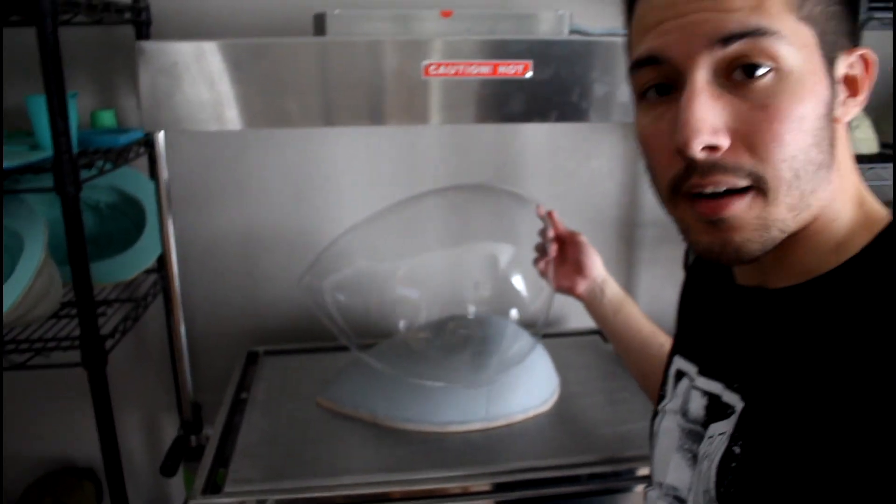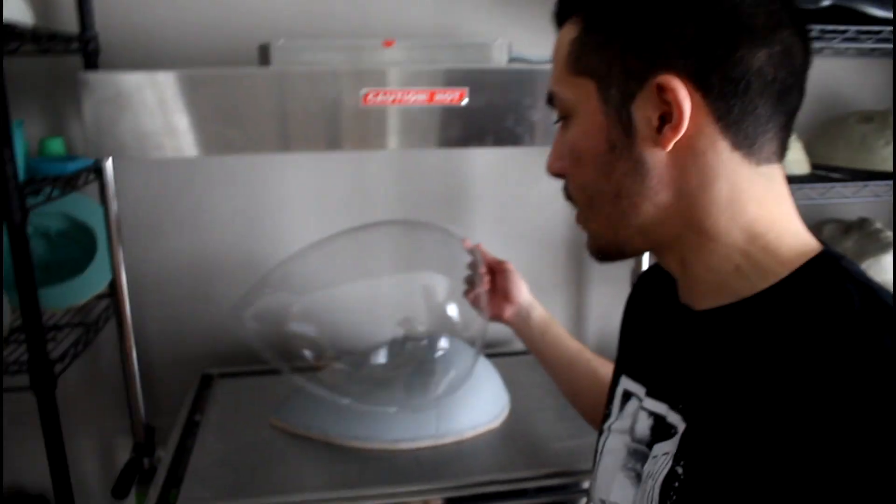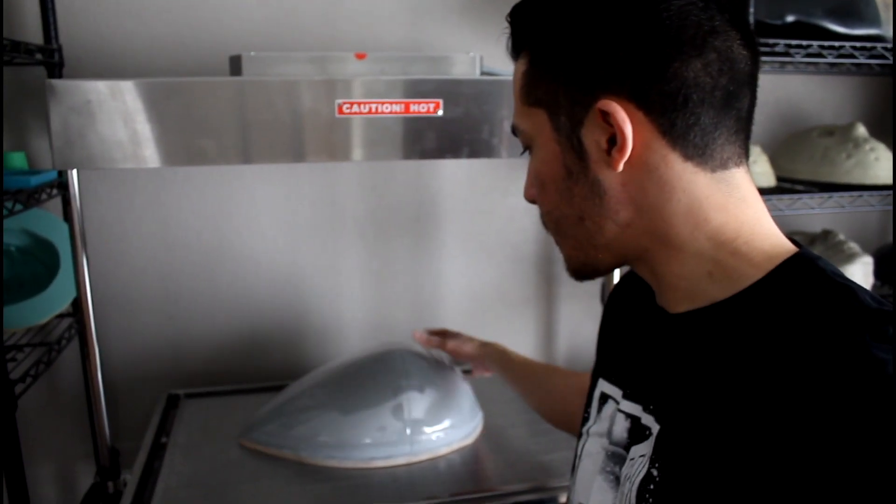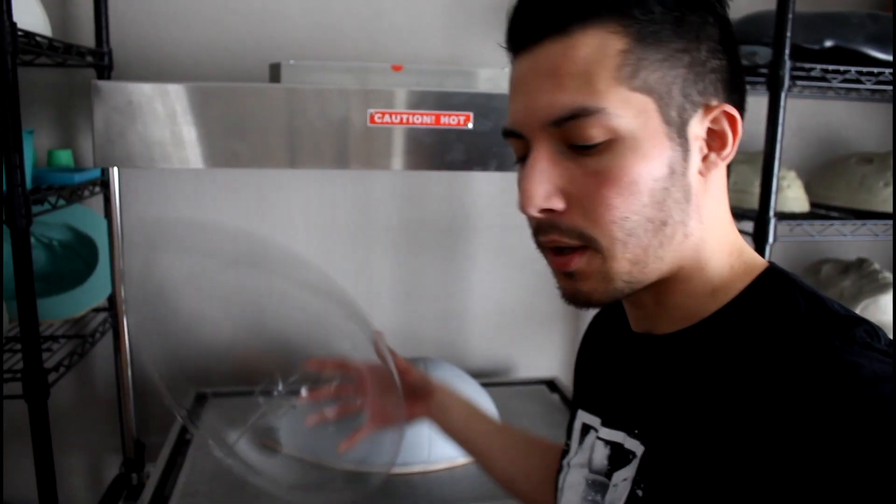Now here is the piece that I vacuum formed already. I will have a demonstration of me vacuum forming this part. This plastic is made out of PETG and this is a 0.40 thickness plastic.